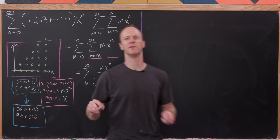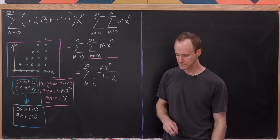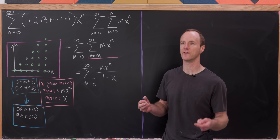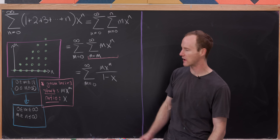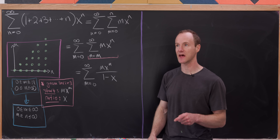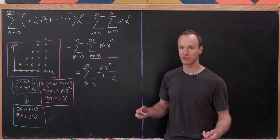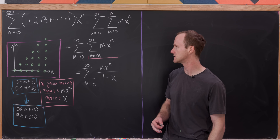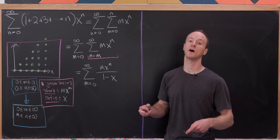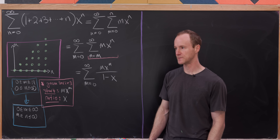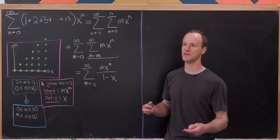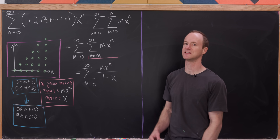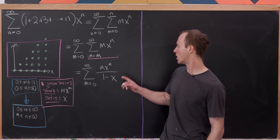If you're worried about convergence, you can take the absolute value of x to be less than one throughout this argument. Generally when using generating functions for combinatorial arguments, x is considered a formal variable, so we simply apply these rules without thinking about convergence — all of this is happening formally.